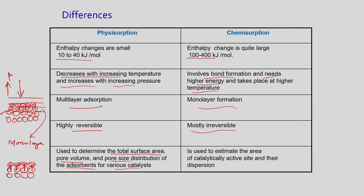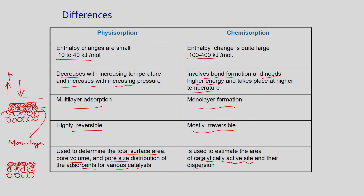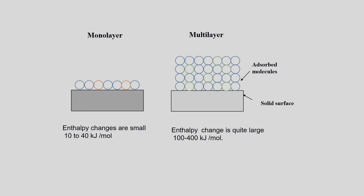In chemisorption, you disperse metal atoms — chemically bonding metal onto a surface. If you send 100 metal atoms and 60 bond with the surface, that is 60% dispersion. Those dispersion sites are called active sites because those are places where reactions take place. The enthalpy change in physisorption is small (10 to 40 kJ/mol), while in chemisorption it is high (100 to 400 kJ/mol) because you are changing the electronic arrangement.